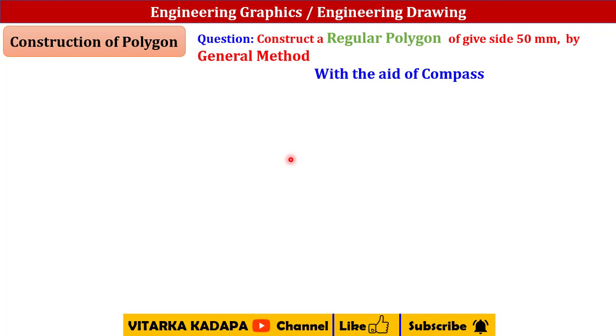Construct a polygon of given side 50 mm by general method. We need to construct a polygon whether it may be a square, pentagon, hexagon, or octagon.